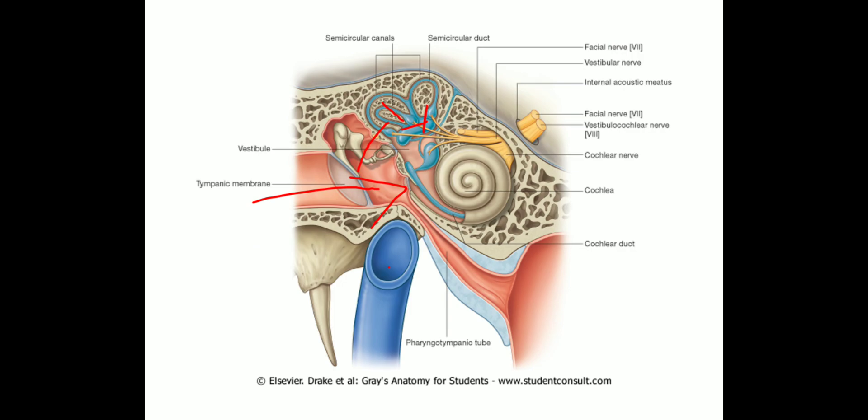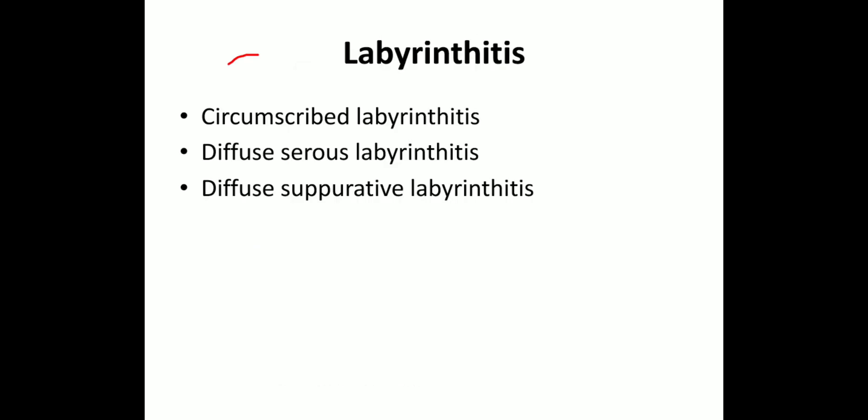To clarify: when we stimulate the labyrinth or whenever there is an irritative lesion of the labyrinth, the direction of nystagmus is towards the same side — towards the affected ear. In case of a paralytic lesion of the labyrinth, the direction of nystagmus is towards the opposite, normal ear. Investigation includes high-resolution CT scan of the temporal bone, which should be taken in all cases of otitis media when complication is suspected. Treatment includes antibiotics and mastoid exploration to remove the pathology and seal the fistula.